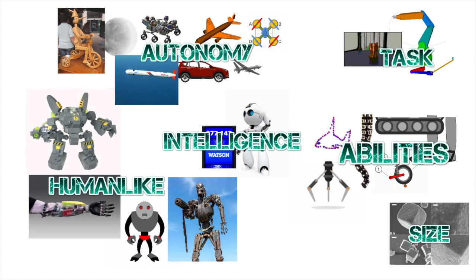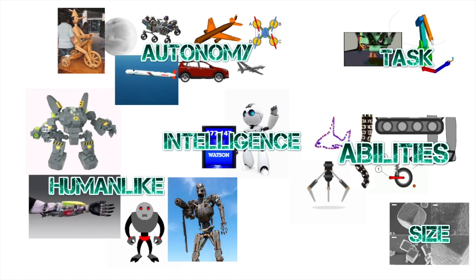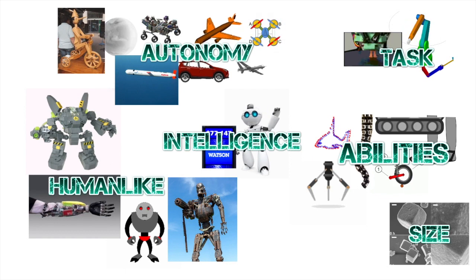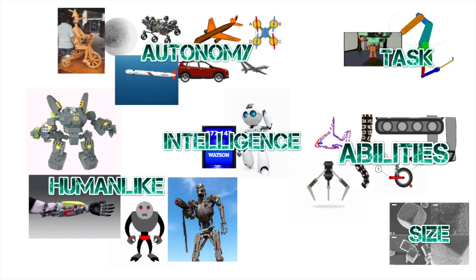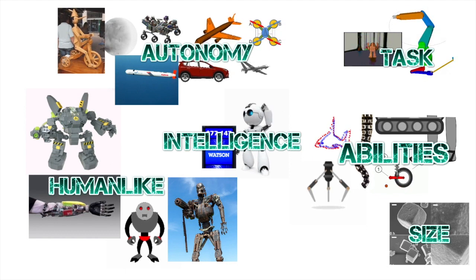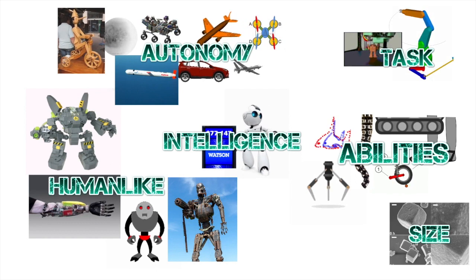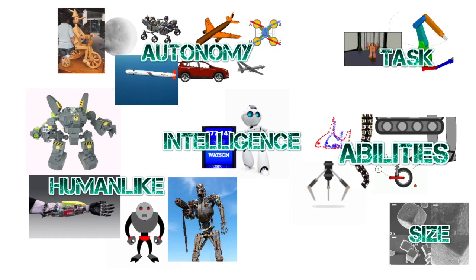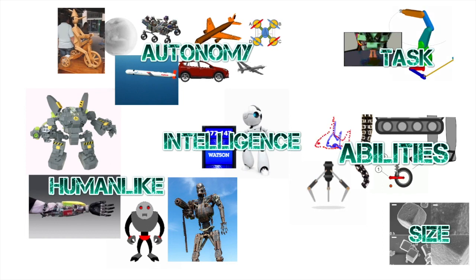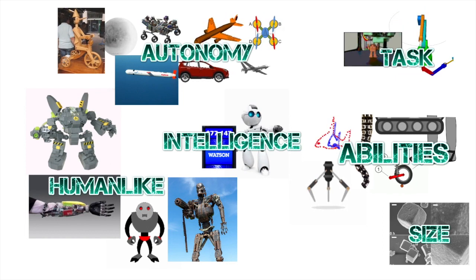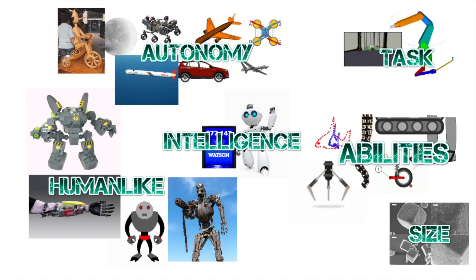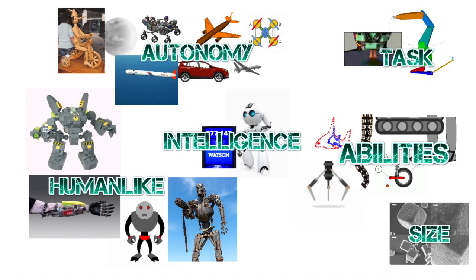And another way you can look at robots is how human-like it is. So there's cyborgs where you actually have robotic parts mixing with human flesh. And then there's robots that look like humans or have the structure of humans, and those are humanoids and androids. And then there's also robots that humans kind of get inside of, sort of like a suit, and those are called mechs.